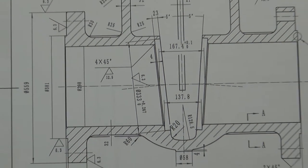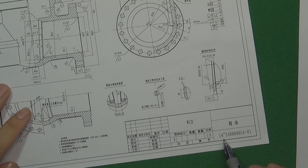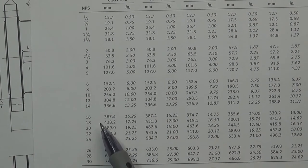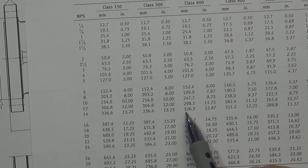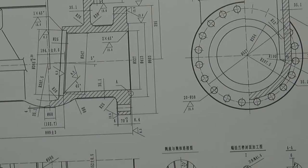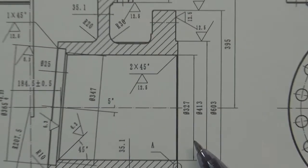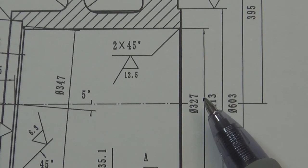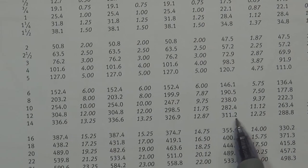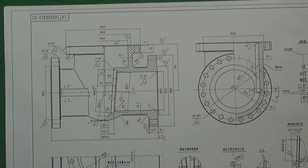The next blueprint is a 14-inch, Class 600 gate valve. From the ASME B16.34 inside diameter table, the inside diameter for 14-inch, Class 600 is 326.9 millimeters. In this gate valve body blueprint, the inside diameter is shown as 327, which matches the table value. So this blueprint was also designed according to ASME B16.34.